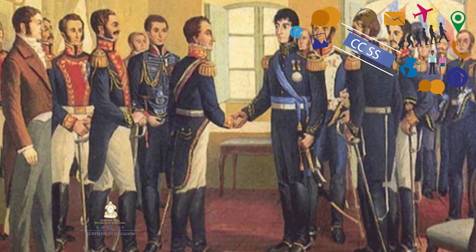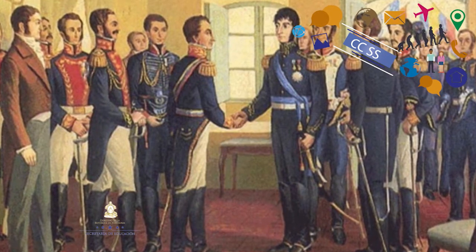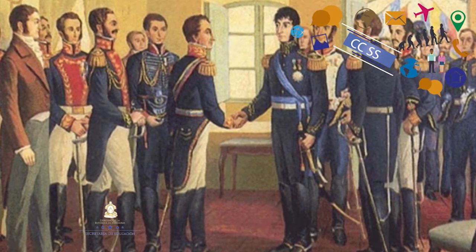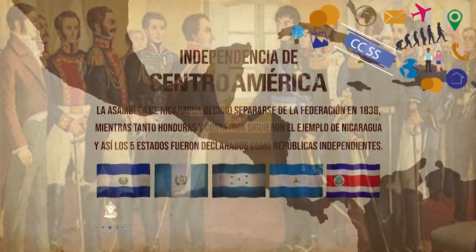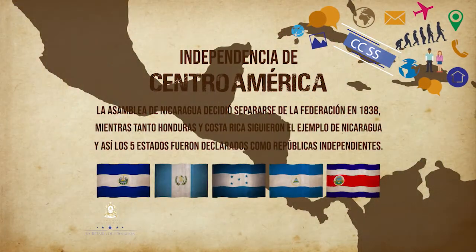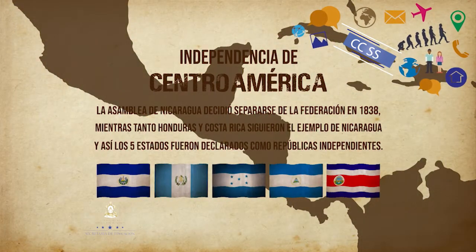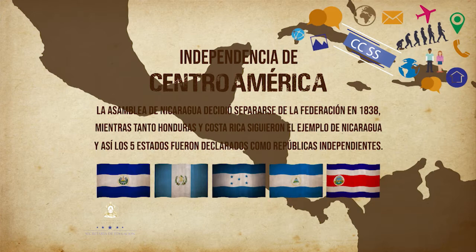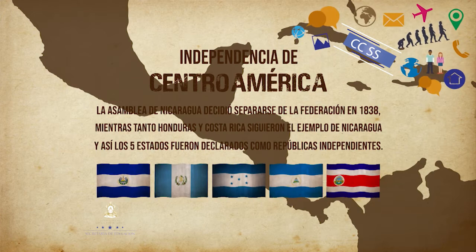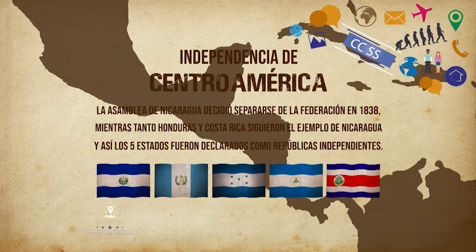La Asamblea de Nicaragua decidió separarse de la federación en 1838. Mientras tanto, Honduras y Costa Rica siguieron el ejemplo de Nicaragua y así los cinco estados fueron declarados como repúblicas independientes.